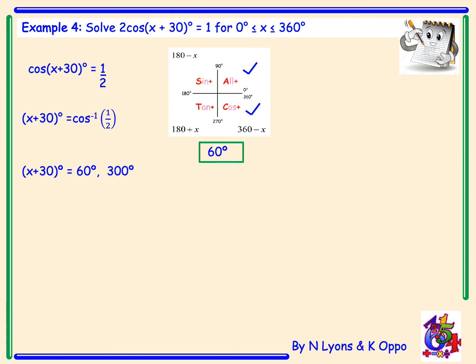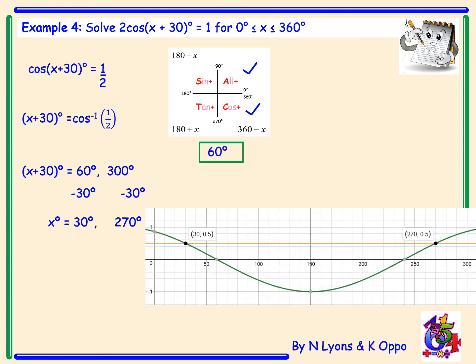x plus 30 degrees gives us these two angles, so we subtract 30 to solve for x, giving a final answer of x equals 30 degrees or x equals 270 degrees. The graph shows the green cosine curve and the yellow line at y equals one half, clearly meeting at 30 degrees and 270 degrees.